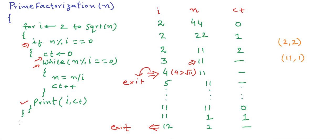n is either 1 or a prime number. So if n is not equal to 1 — which would be a special case — then we know that n is a prime number. So we print n as the prime factor, and its frequency would be 1.